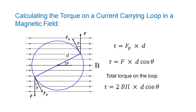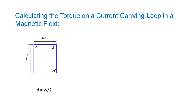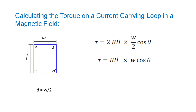The magnitude of the torque acting on the loop will therefore be given by the equation TAU equals 2BIL multiplied by D cos theta, where theta is the angle between the plane of the loop and the magnetic field, and BIL is the force on each of the sides of the loop. The straight line distance from the axis of rotation to the point of the force for both sides AC and BD will be equal to W over 2, half the width of the coil. Substituting this in, we get TAU equals 2BIL multiplied by W over 2 cos theta, which simplifies to TAU equals BIL multiplied by W cos theta. Since the length multiplied by the width equals the area, we can rewrite this as TAU equals BIA cos theta, where A is the area of the loop in meters squared.